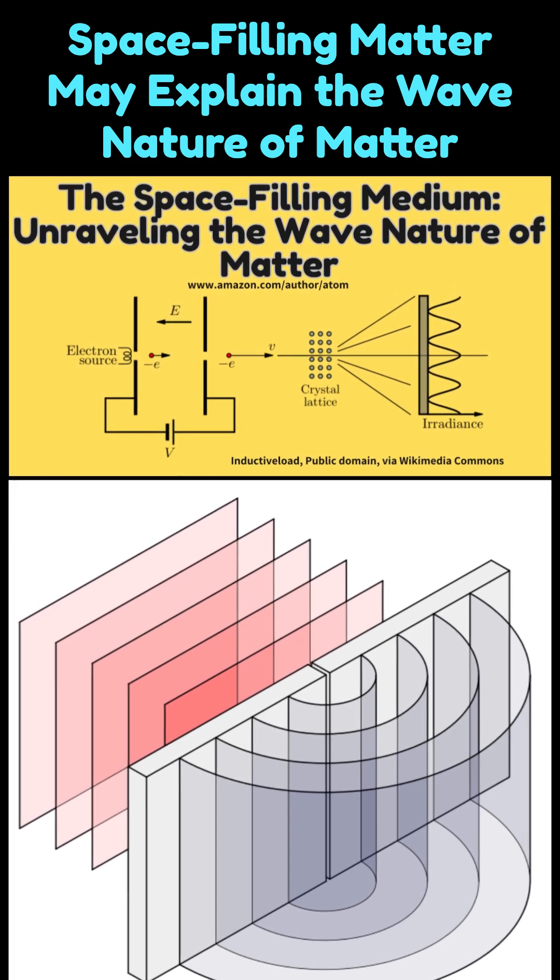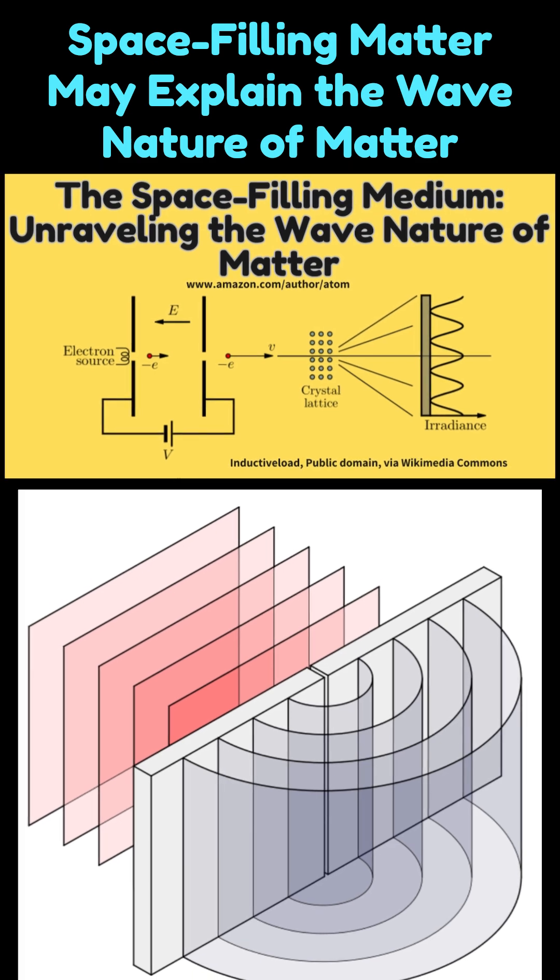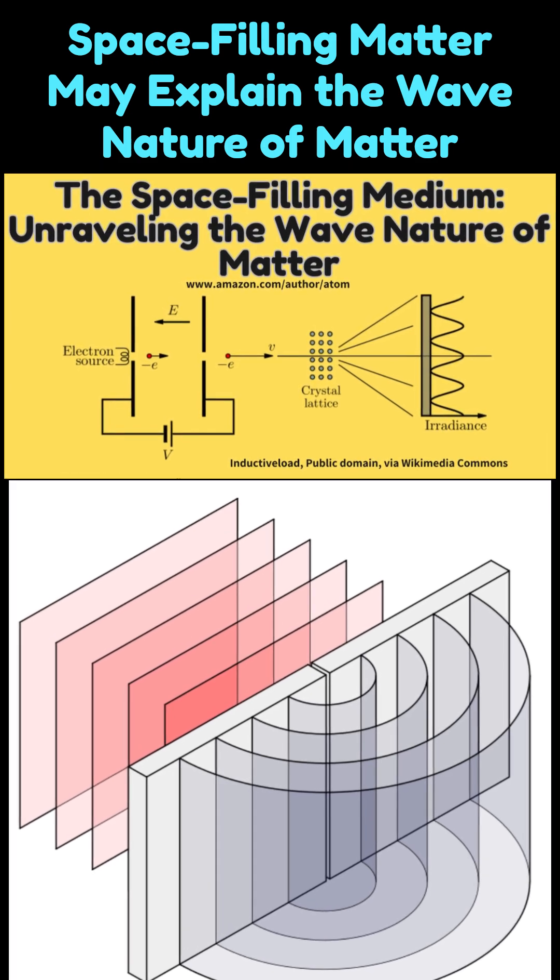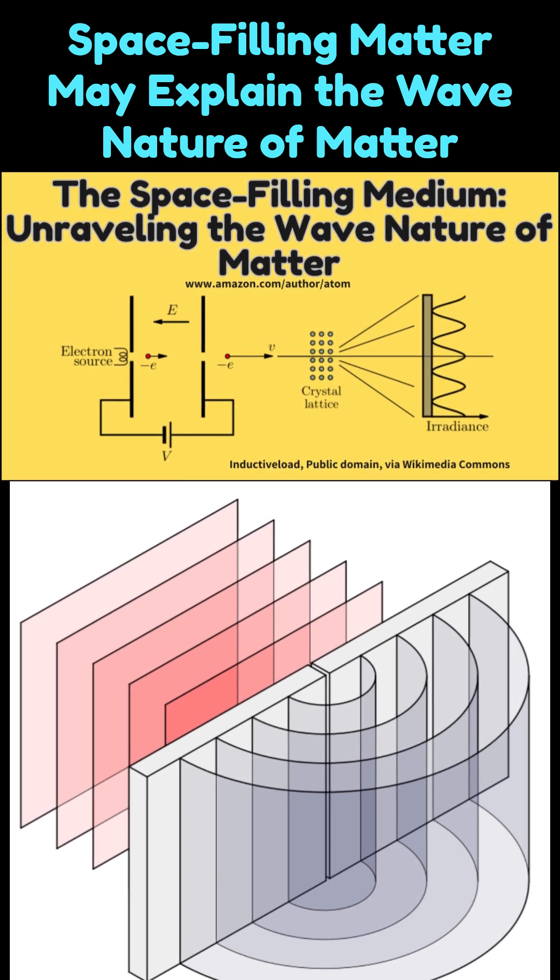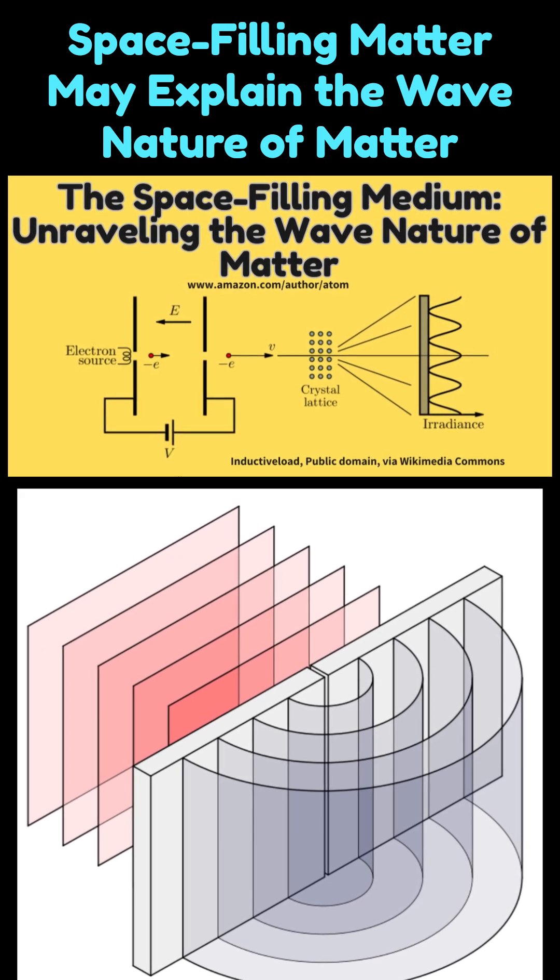in the double slit experiment. It suggests that the disappearance of the interference pattern may not result solely from the act of observation. Instead, it could stem from the physical interaction between the detecting apparatus and the space-filling matter that guides particle trajectories.